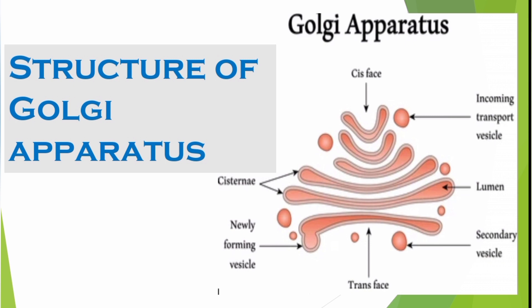The first function of the vesicles is the formation of the plasma membrane — this is called plasma membrane biogenesis. If you have any doubts, please let me know in the comment box.